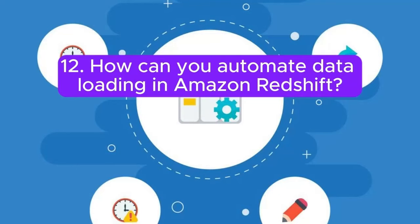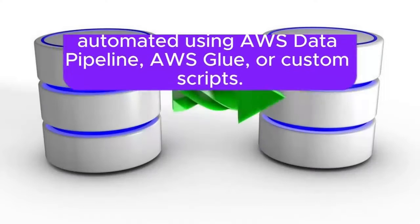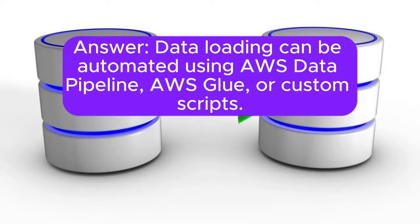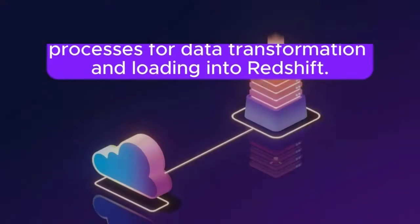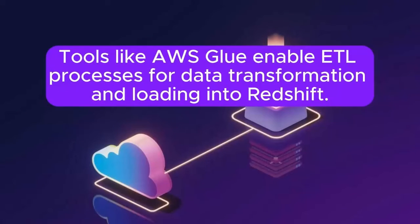Question 12: How can you automate data loading in Amazon Redshift? Answer: Data loading can be automated using AWS Data Pipeline, AWS Glue, or custom scripts. Tools like AWS Glue enable ETL processes for data transformation and loading into Redshift.